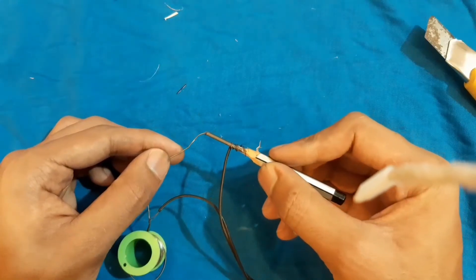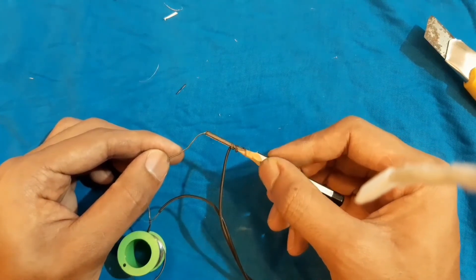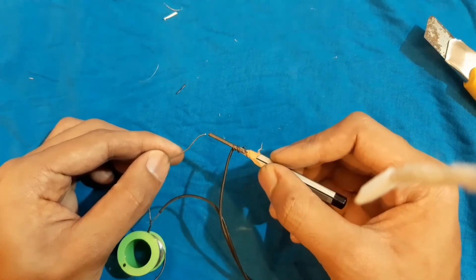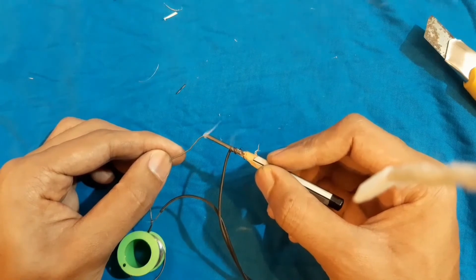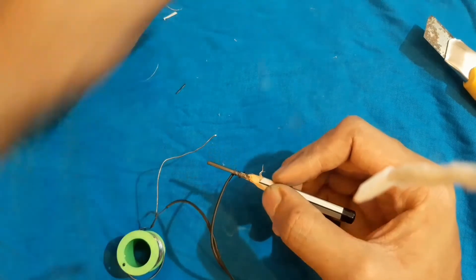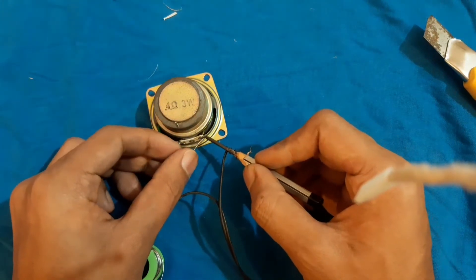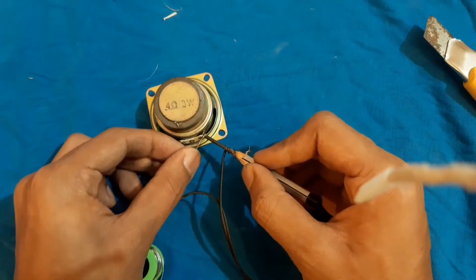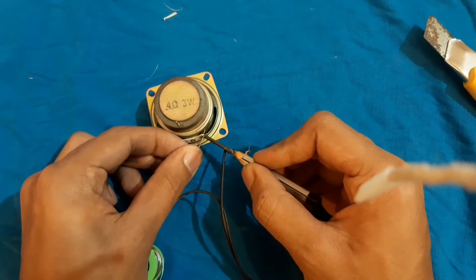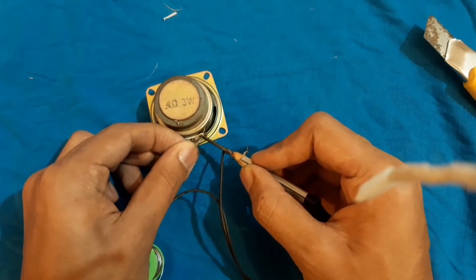Now we apply the lead to the component lead. Now we can apply the lead to the solder side. Now we apply the lead to the speaker. Now we can apply the solder side.